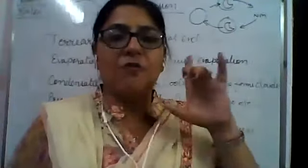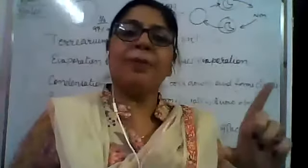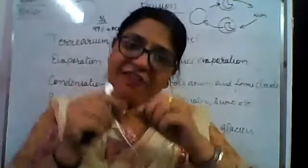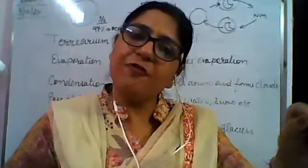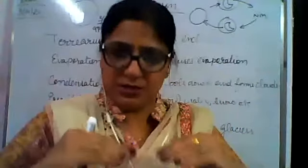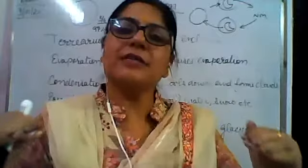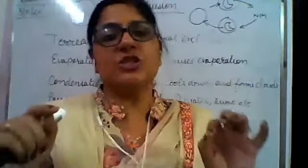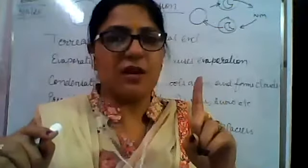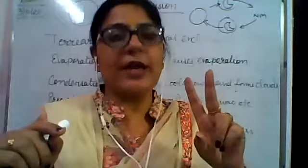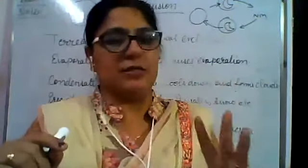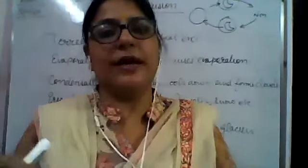To summarize: the example of a warm current is the Gulf Stream, and the example of a cold current is the Labrador current. The ocean is always in circulation — through waves caused by external factors, tides caused by gravitational pull with spring tide and neap tide, and third, ocean currents. I hope it is clear to everyone.